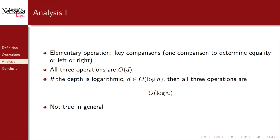For all three operations, the elementary operations were key comparisons, and all three were proportional to the depth of the tree, giving us order D. This differs from our previous analyses in that complexity depends on the structure itself rather than input size. If we have a more or less full tree, the depth would be logarithmic — D would be order log n — and all three operations can be said to be logarithmic, achieving our goal of a general-purpose collection data structure with efficient logarithmic complexity for all three basic operations.